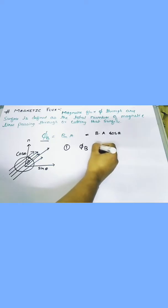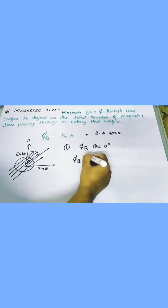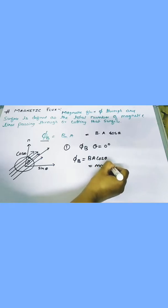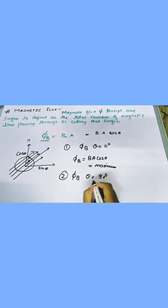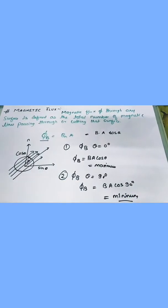First case: when theta equals 0 degrees, the flux will be maximum, because the maximum number of field lines will be passing through it. Second case: when theta equals 90 degrees, the minimum number of magnetic field lines will pass through that area. We have B cos90, so the flux will be minimum in the case of 90 degrees. So the flux is maximum when theta is 0 degrees, and minimum when theta is 90 degrees.